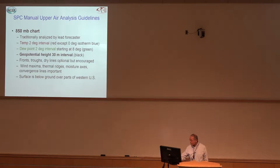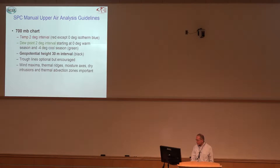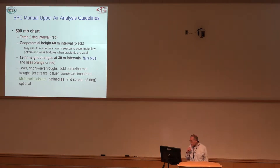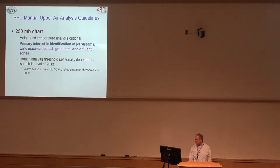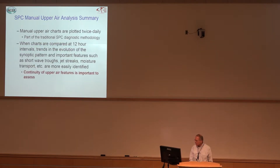An additional problem is that the 850 mb surface is typically below ground in the western parts of the U.S., so it's not as useful out there — 700 mb is. Again, we use 2-degree intervals there. At the 500 millibar chart we do a little bit more at times. At 250 mb we don't do as much analysis — we're primarily interested in jet structure and where the maxima are located. These charts are automatically plotted out at SPC twice daily.